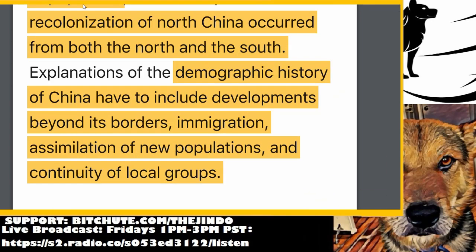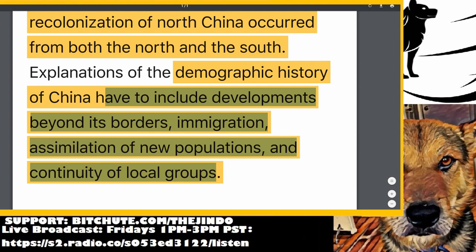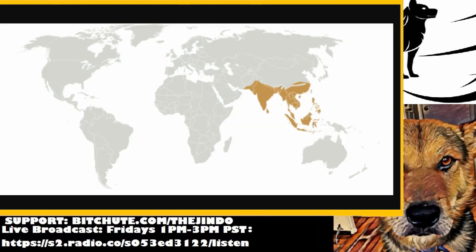The researchers suggest that explanations of the demographic history of China have to include developments beyond its borders — immigration, assimilation of new populations, and continuity of local groups. My main question is: I wonder how many wars were fought, or did they even have war, or were they just open and accepting of each other? There's no evidence of actual warfare back in those days, so maybe there was some sort of trade or harmonious coexistence that united these different species or different offshoots of humans.